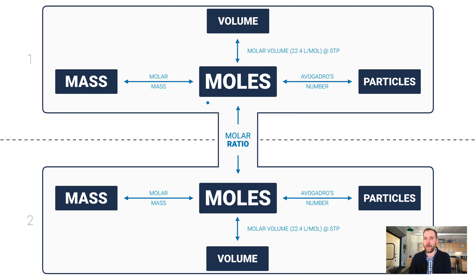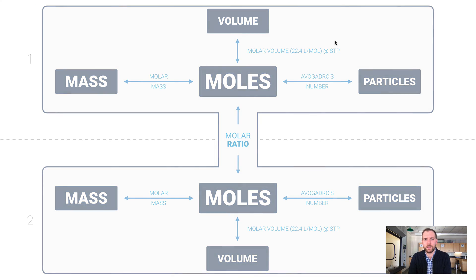As long as we're talking about STP conditions, that means one mole of any substance is going to have a volume of 22.4 liters. It's crucial that you see this: it's got to be at standard temperature and pressure. If the temperature or pressure is different, this number changes and that 22.4 liters per mole is not going to work out if we're not at STP. In this video, all the problems we're going to do are at STP.